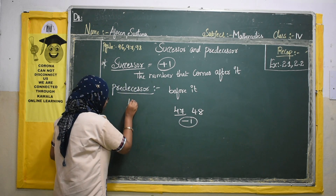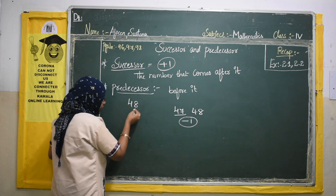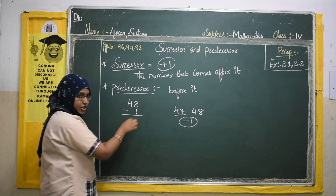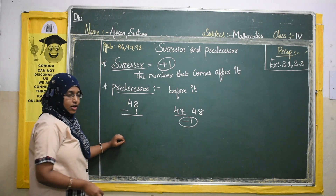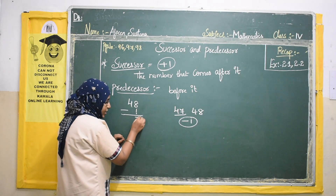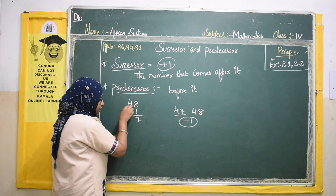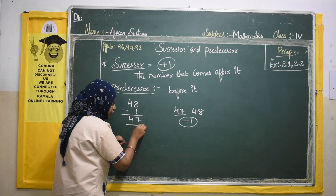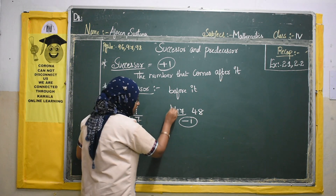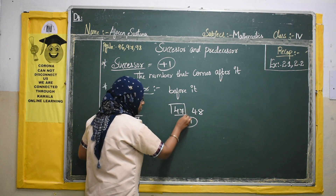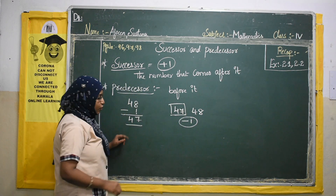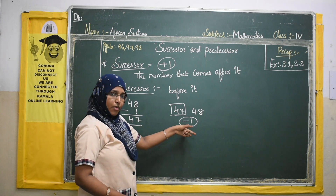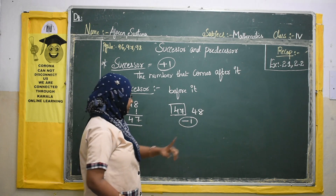Let us verify: 48 minus 1. 8 minus 1 is 7, the tens digit stays as 4, giving us 47. We got the answer 47. So predecessor means we subtract 1 — minus 1.